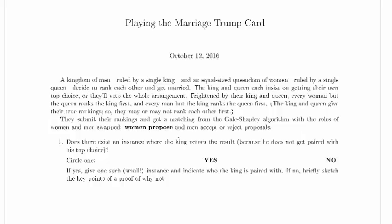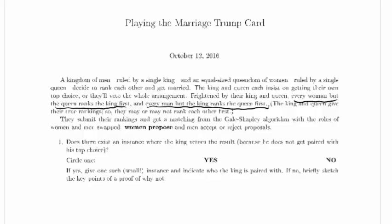Does there exist an instance where the king vetoes the result because he does not get paired with his top choice? So the veto doesn't really matter here. We can just think about this as an instance of stable marriage with these interesting constraints. I'm just going to underline these constraints here. Every woman but the queen ranks the king first, and every man but the king ranks the queen first. Those are the crucial constraints.